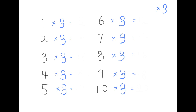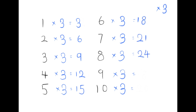1×3 is 3, 2×3 is 6, 3×3 is 9, 4×3 is 12, 5×3 is 15, 6×3 is 18, 7×3 is 21, 8×3 is 24, 9×3 is 27, 10×3 is 30.